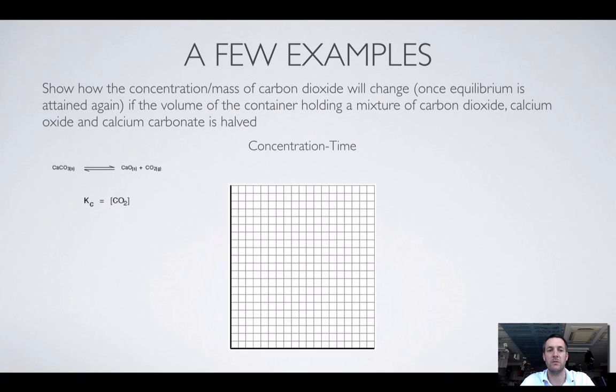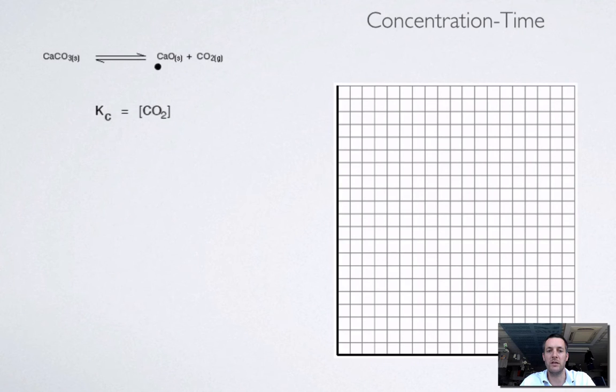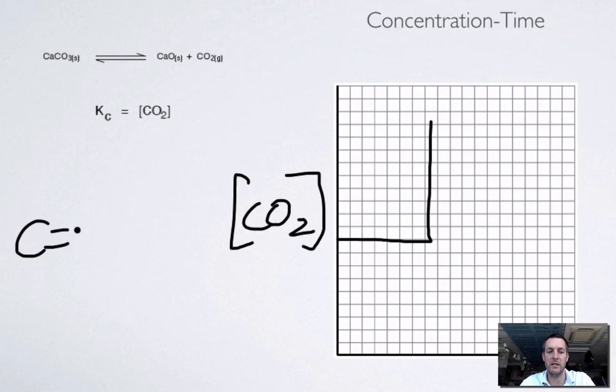Let's have a look at a couple of examples. First of all, we'll start with this equilibrium system between calcium carbonate and calcium oxide and carbon dioxide. We're going to ask ourselves, if we had a container with this system in it and we halved the volume of it, how would the concentration and mass of carbon dioxide change in this container? The equilibrium constant is equal to the concentration of carbon dioxide. Suddenly we halve the volume of the container, so the concentration will double, because C equals N on V.